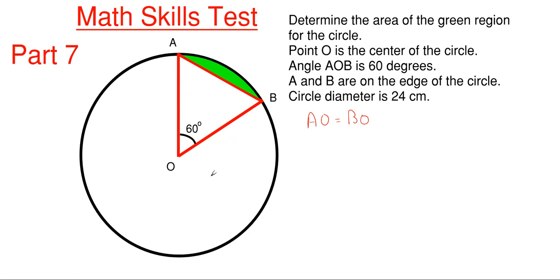This means that each one of those legs of that red triangle is going to be 24 centimeters over 2, which gives me 12 centimeters in length.